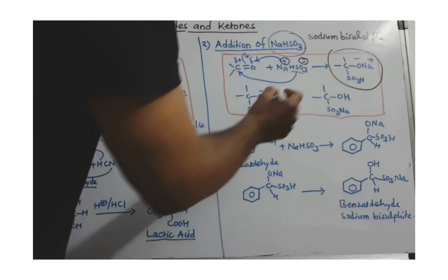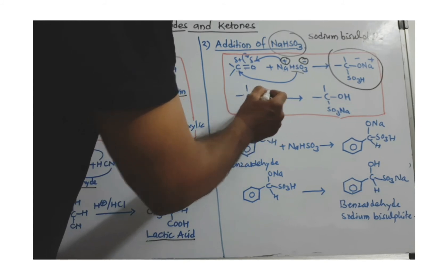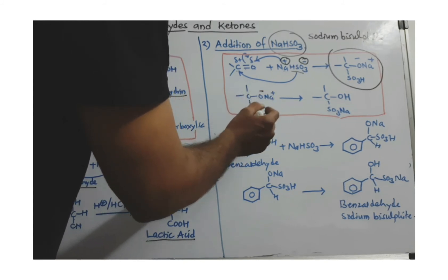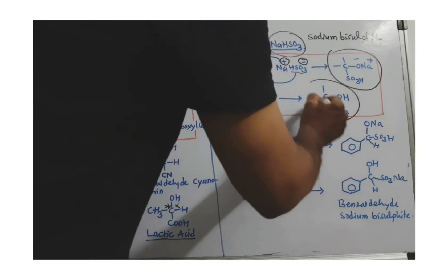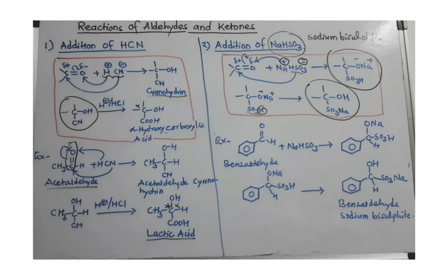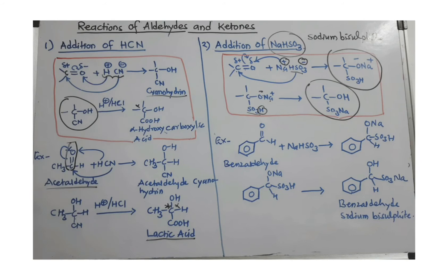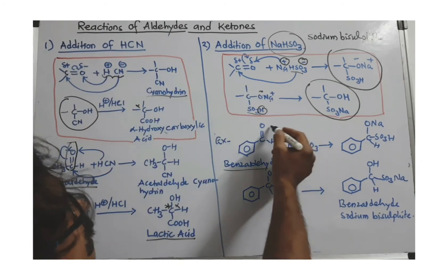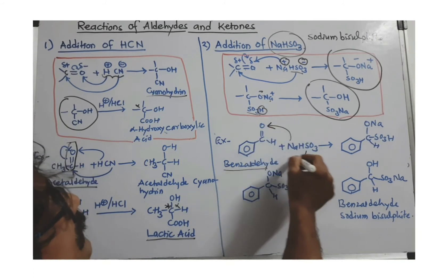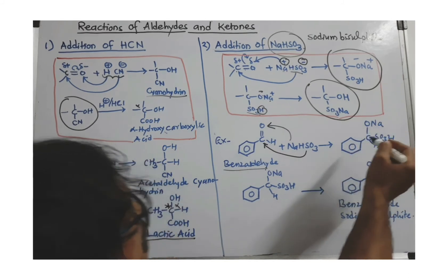We get an addition product. In this addition product, you can see there is an acidic proton and a negatively charged oxygen which are very close, so the H transfers to the oxygen and sodium goes there. This is the final addition product — this is the general scheme of this reaction. Taking an aldehyde as example: sodium goes to the oxygen, the bisulfite portion goes to the carbonyl carbon, and the double bond is removed.